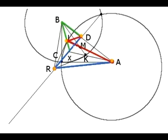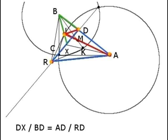From this it follows that the two right triangles ARD and XBD are similar, and the proportion DX/BD = AD/RD is true.